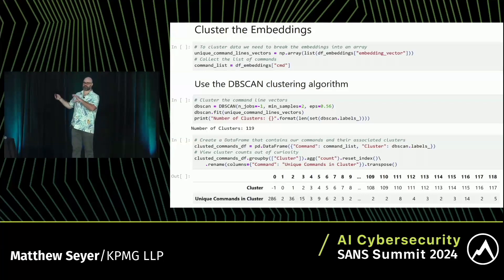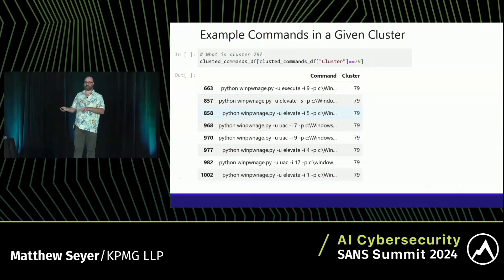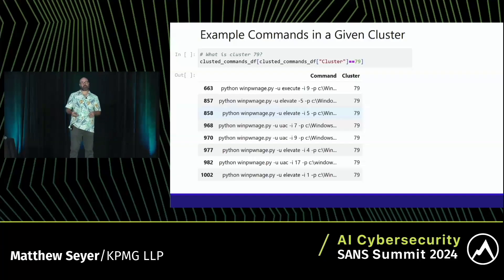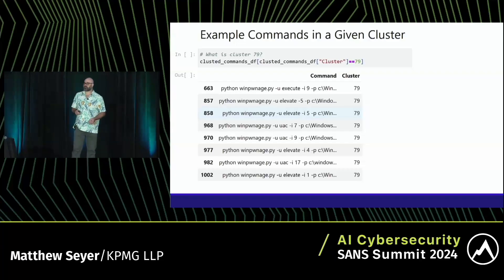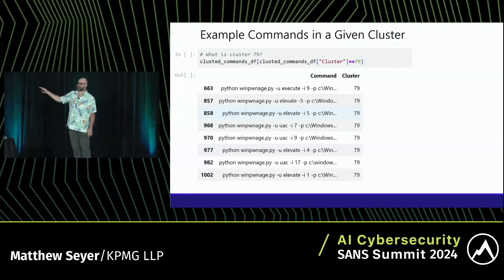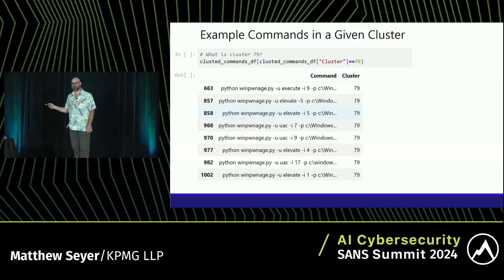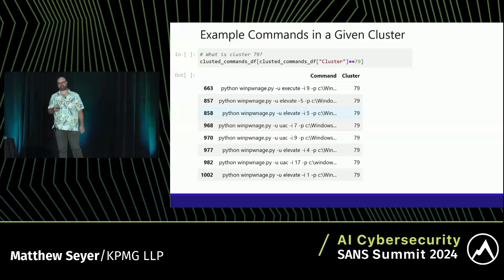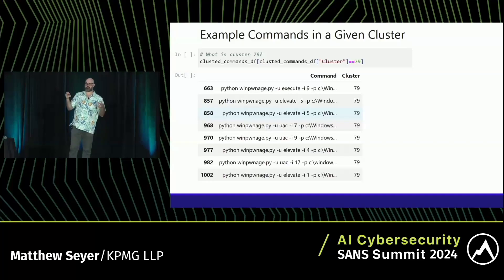These are our groups of similar commands being run. You can say, 'Show me cluster 79' — and here you have a bunch of winpwnage script running. Notice all of these commands are different, but they're all grouped together by similarity. So if I see attacker activity and I see one execution, I can say 'show me similar activity' — and now I see these executions, these elevates, these UACs, these subcommands of winpwnage. That's pretty cool because it's all in one spot.